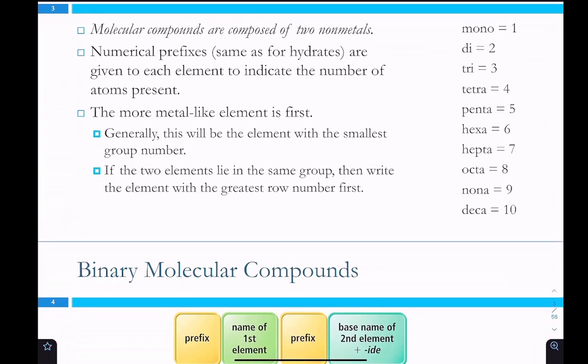When you're naming these compounds, most of the time you're going to have either the compound or the formula, so you're going to be given the order in most examples. If you don't have that, if you're just trying to make a compound out of two different elements, you generally start with the most metal-like element. It will also be the element with the smallest group number.